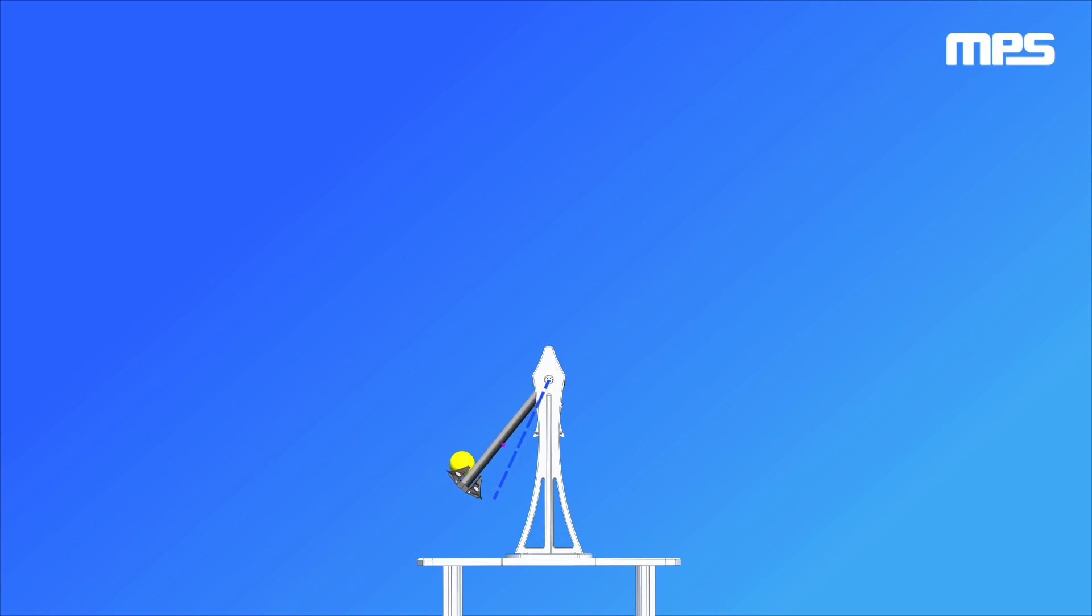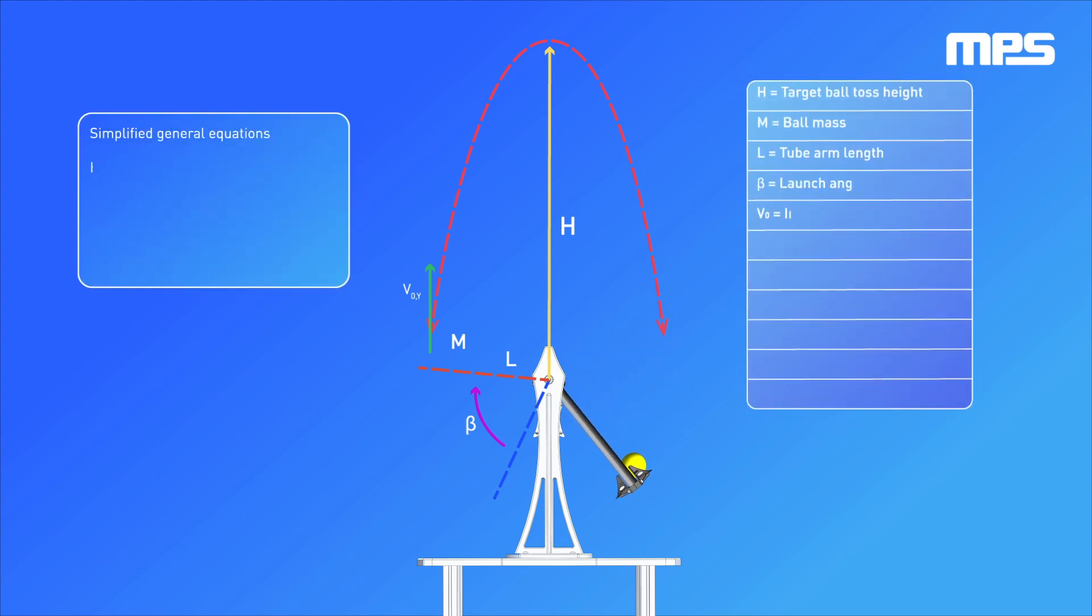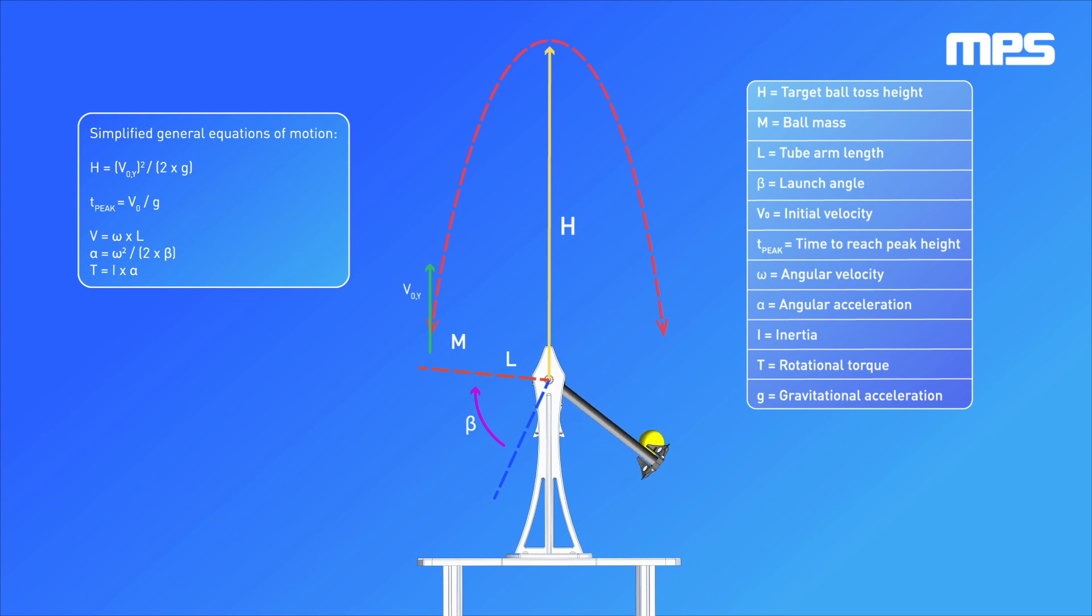The design targets a ball toss height about one meter above the arm's rotation axis and is able to throw and catch the ball at the same elevation. Combining that simple design performance target with the physical parameters of the system as shown here, we can use general equations of motion for rotational bodies and ballistic flight trajectories to derive the motor performance requirements.